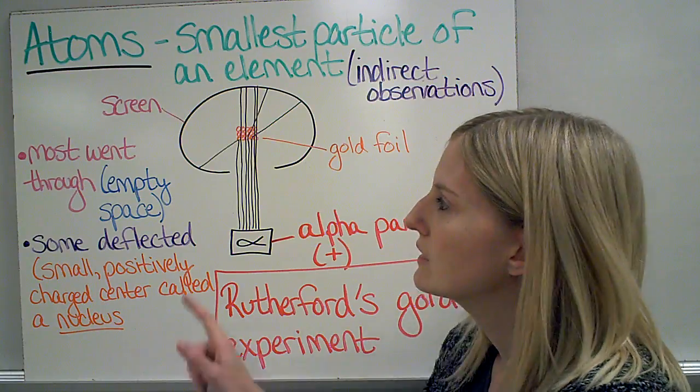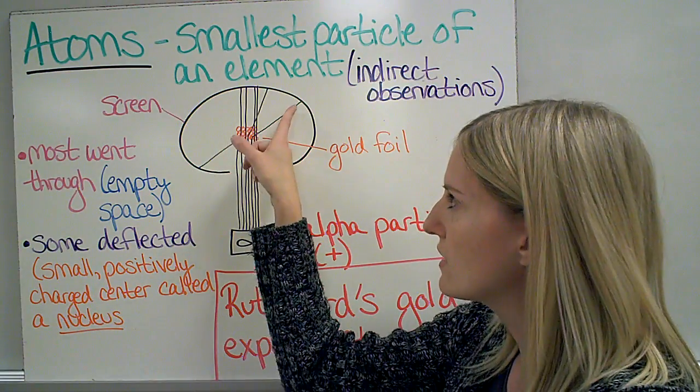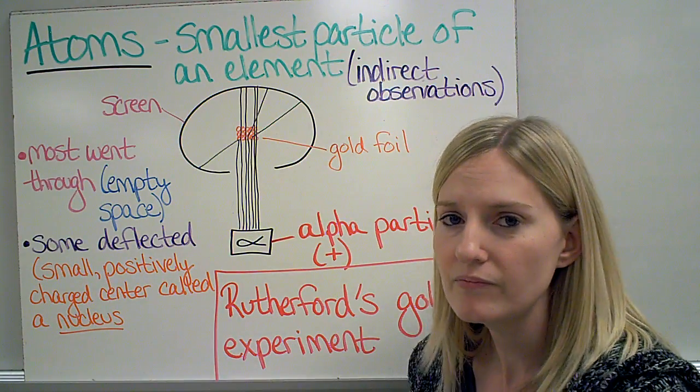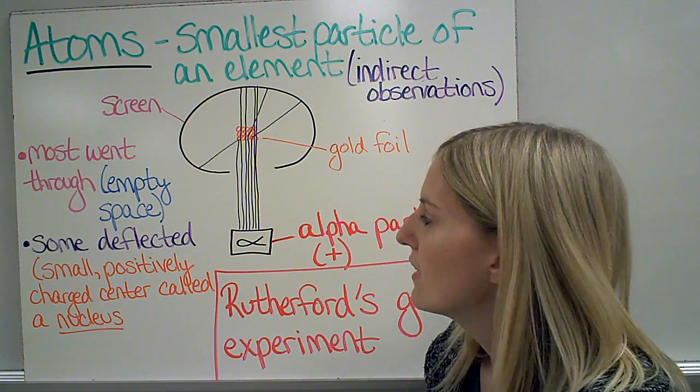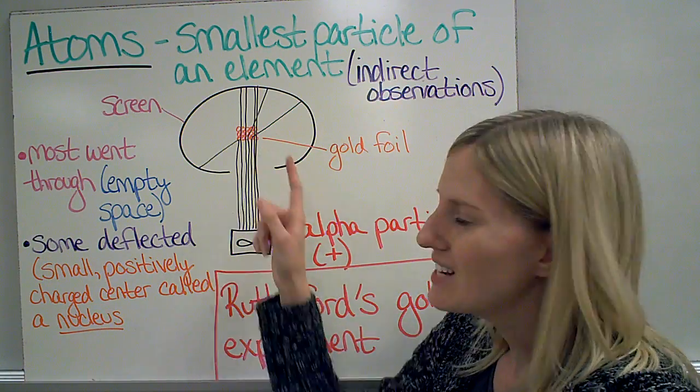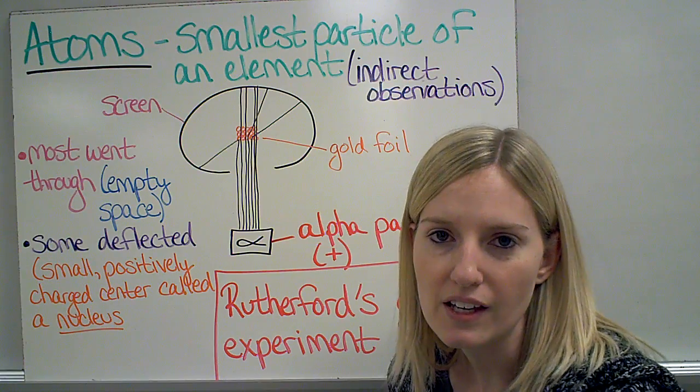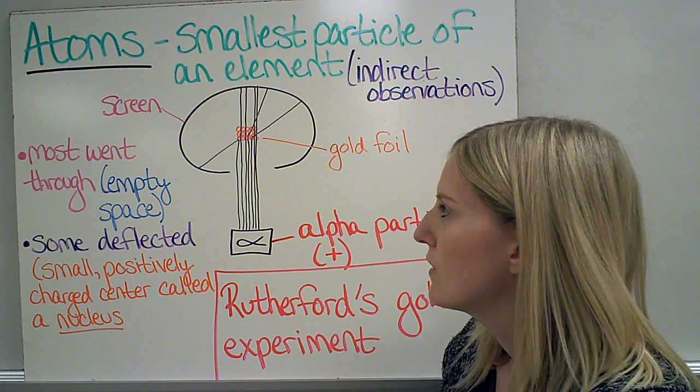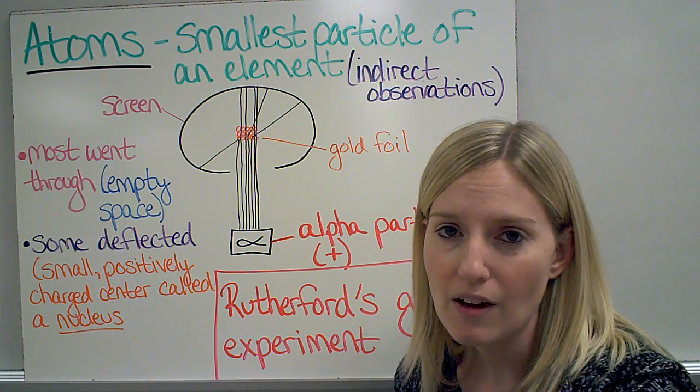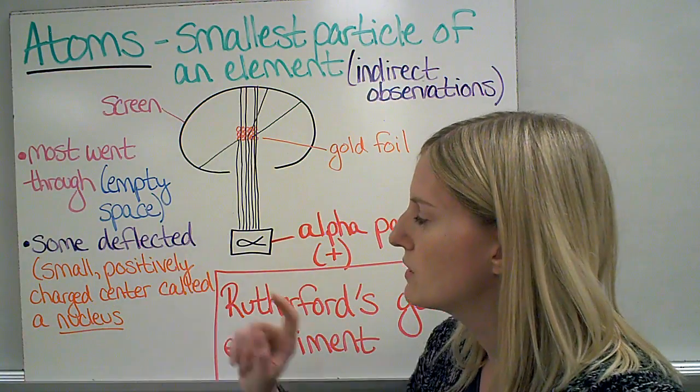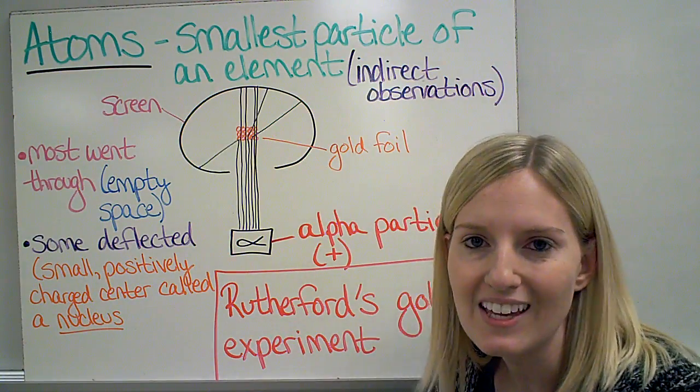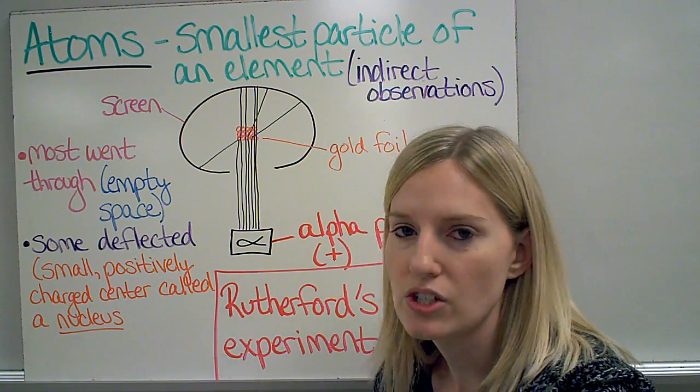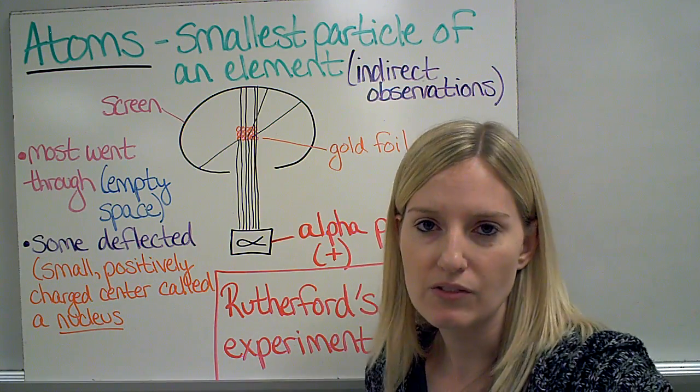Some of them were deflected, meaning that they went off at different angles. What this tells us is that those positively charged particles must have hit something in the atom. Because some of them were deflected, we know that most of them were not deflected, they went straight through, so most of it is empty space. So we know that whatever they hit must be very small, and we know that they must be positively charged, because our particles here were positively charged.